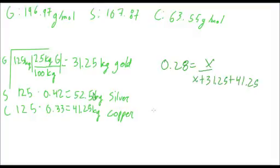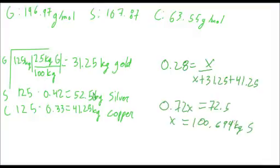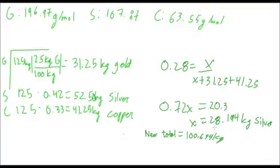So if we do the cross-multiplication for this part, we will get a new amount of silver, which is 28.194 kilograms. And then we take that number, and we simply add it up to the original gold and copper, which have not budged whatsoever. And that gives us a new total mass of our ore of 100.694 kilograms.